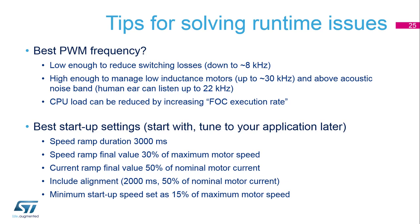If we want to start our engine properly, we have to choose proper startup settings. We can achieve best startup settings initially by using pre-calculated parameters and tuning them later. The speed ramp duration should be set to 3 seconds initially, the speed ramp final value to 30% of the maximum motor speed, and the current ramp final value to 50% of the nominal motor current. We should also include alignment — initially 2 seconds and 50% of nominal motor current — and set a minimum startup speed of 15% of maximum motor speed.